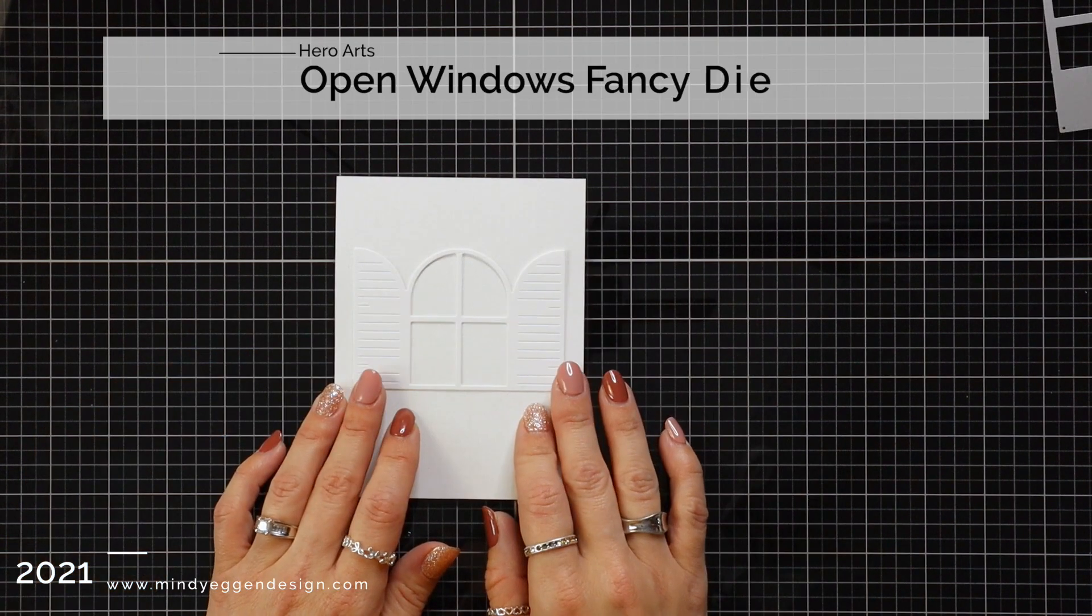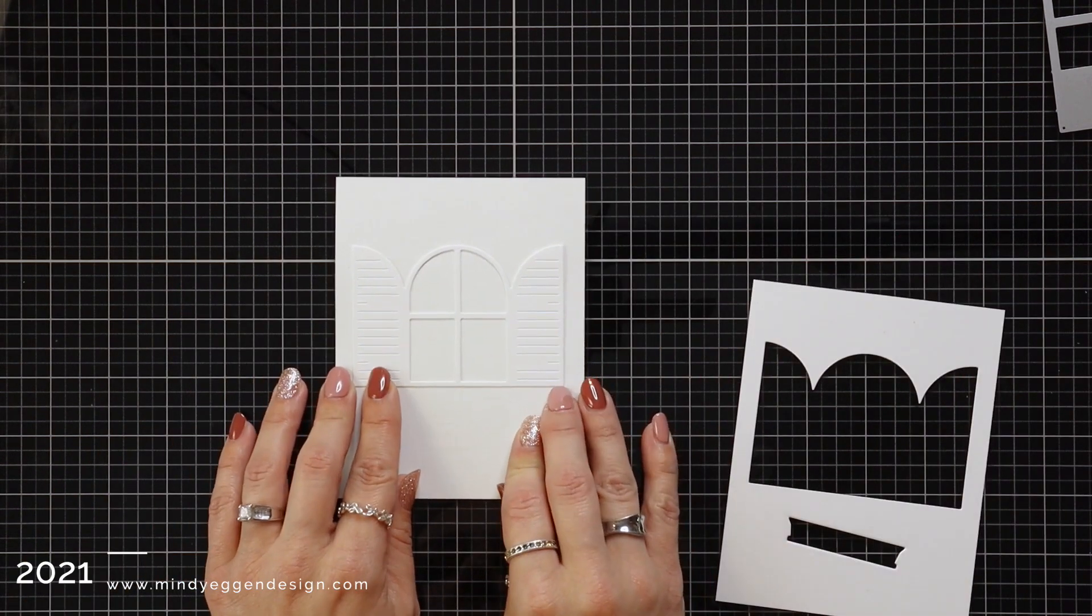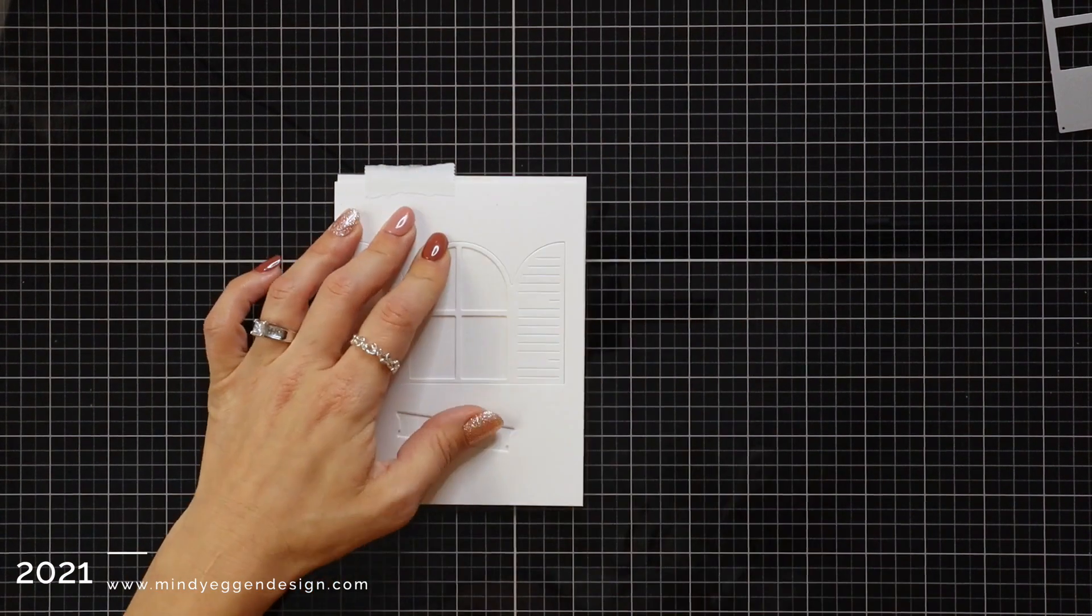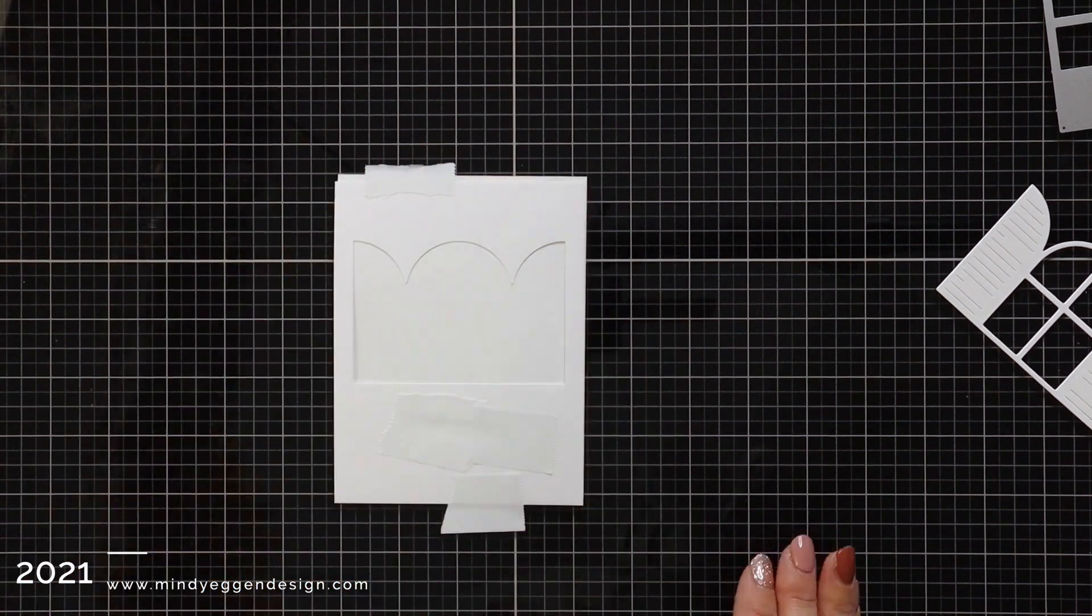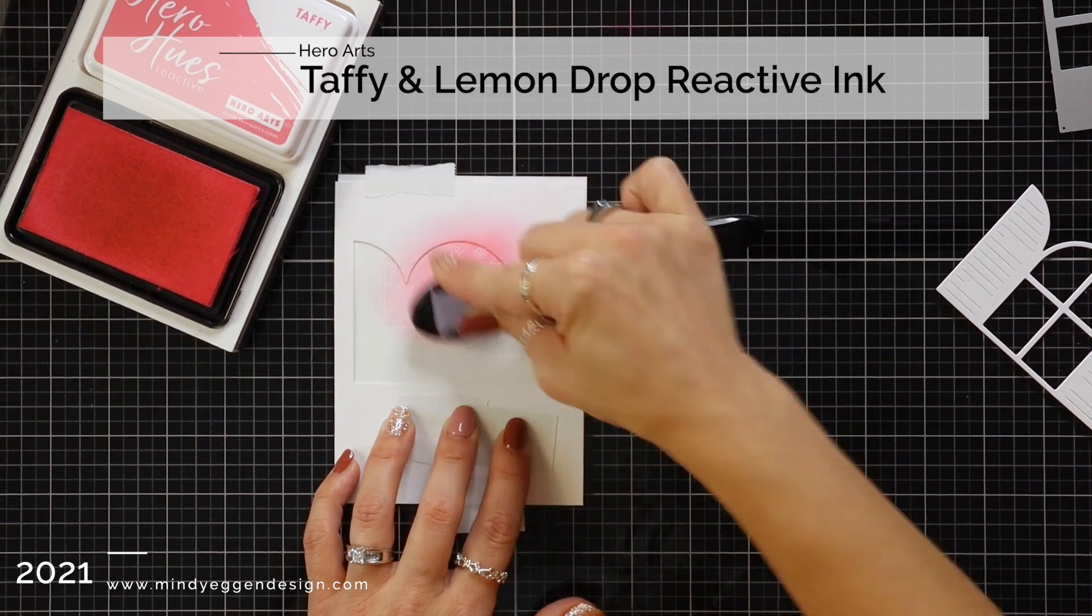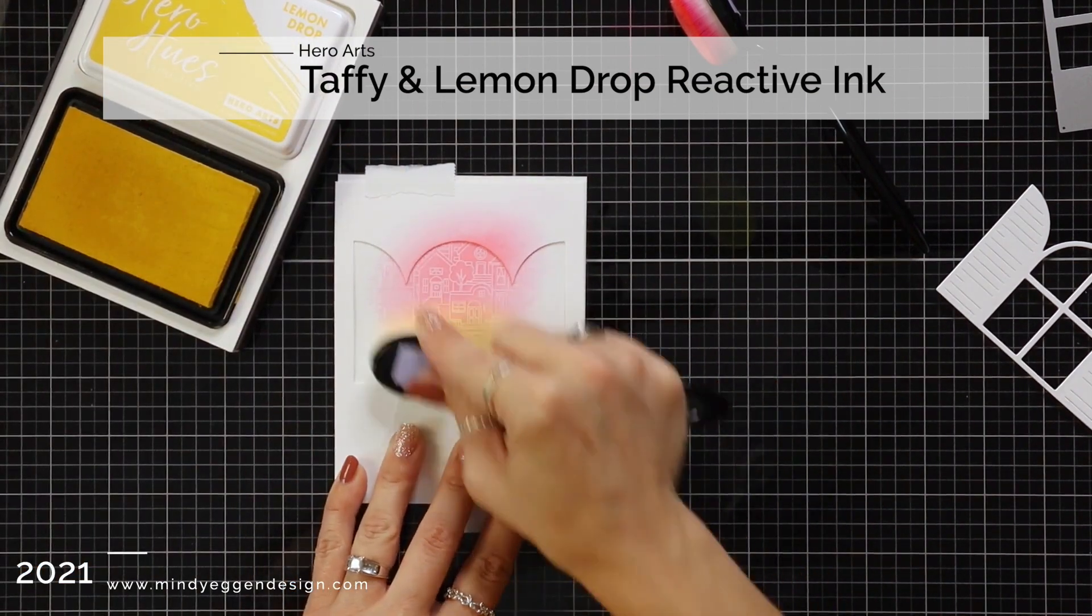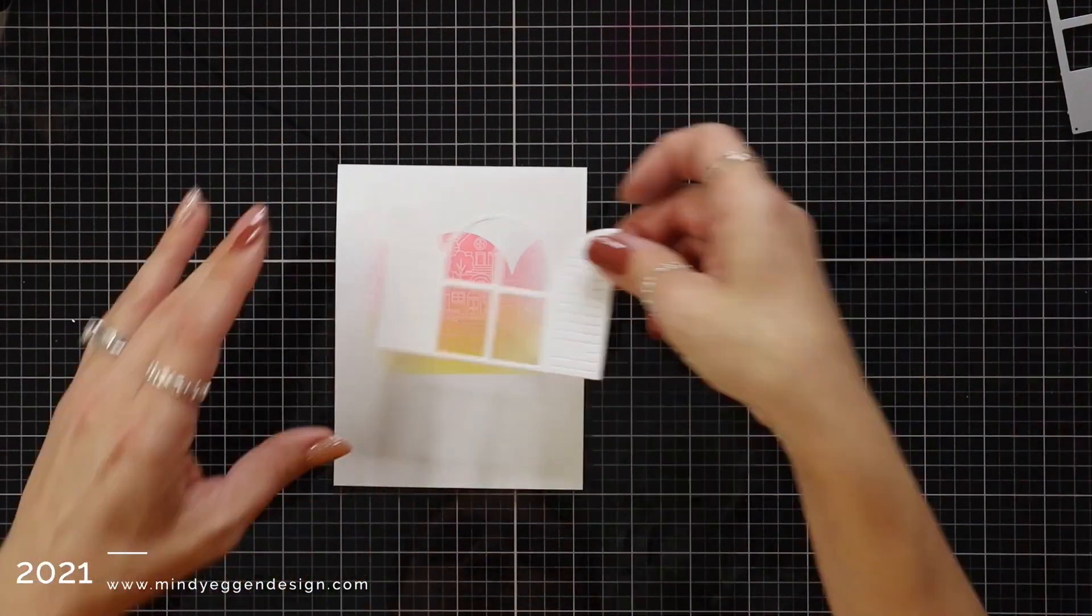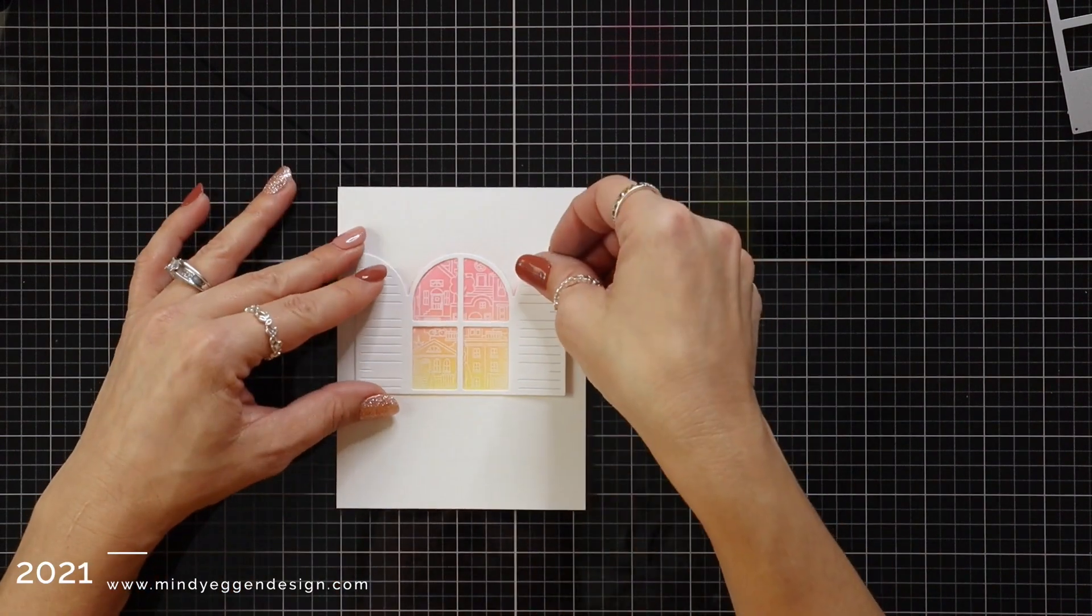Now I'm bringing in the Open Windows Fancy Die. I die cut it from white cardstock. I'm going to really speed this process up because I didn't end up going with this idea. But I wanted to still show you how my thoughts play out here. I used the negative and positive piece of the window. I wanted to at first start by just ink blending behind the window and the rest of the card being white. I ended up not liking that, but I'm still going to walk you through the steps. I'm ink blending in that negative space, which is masking off the rest of my card, and I'm ink blending taffy and lemon drop reactive ink.